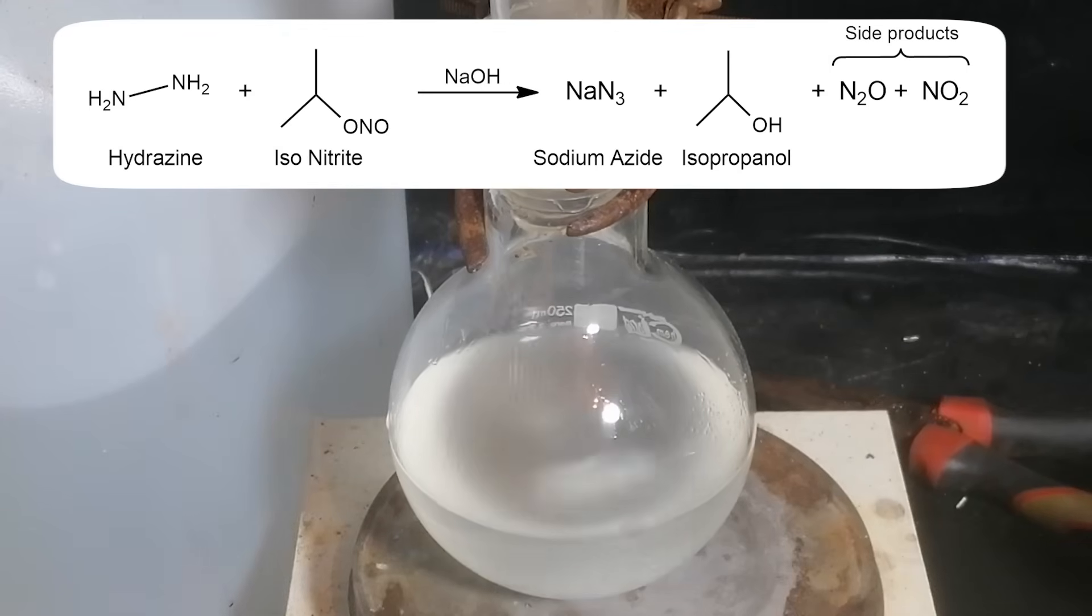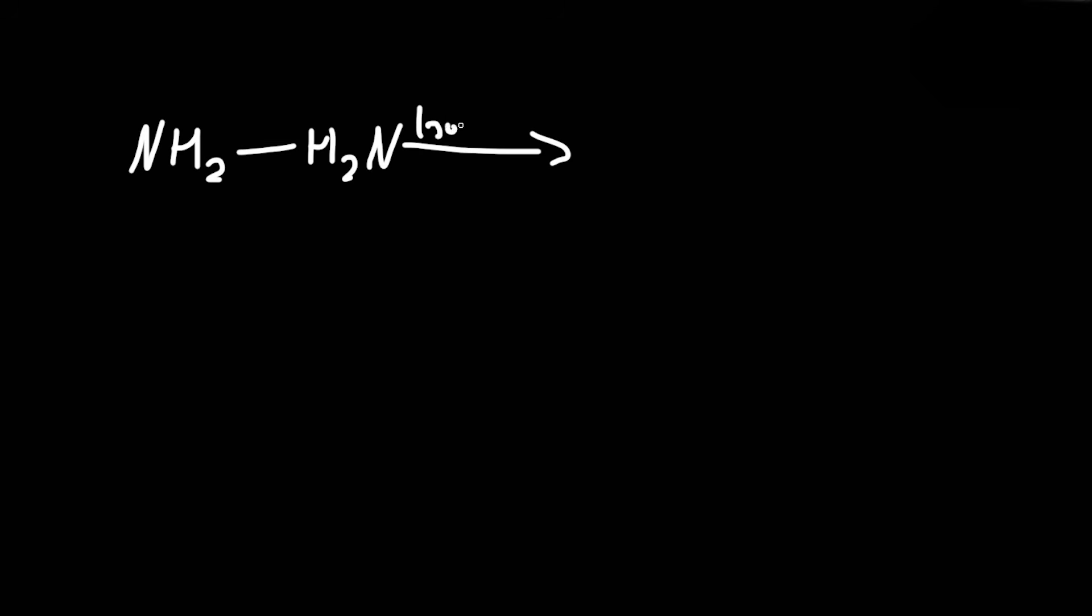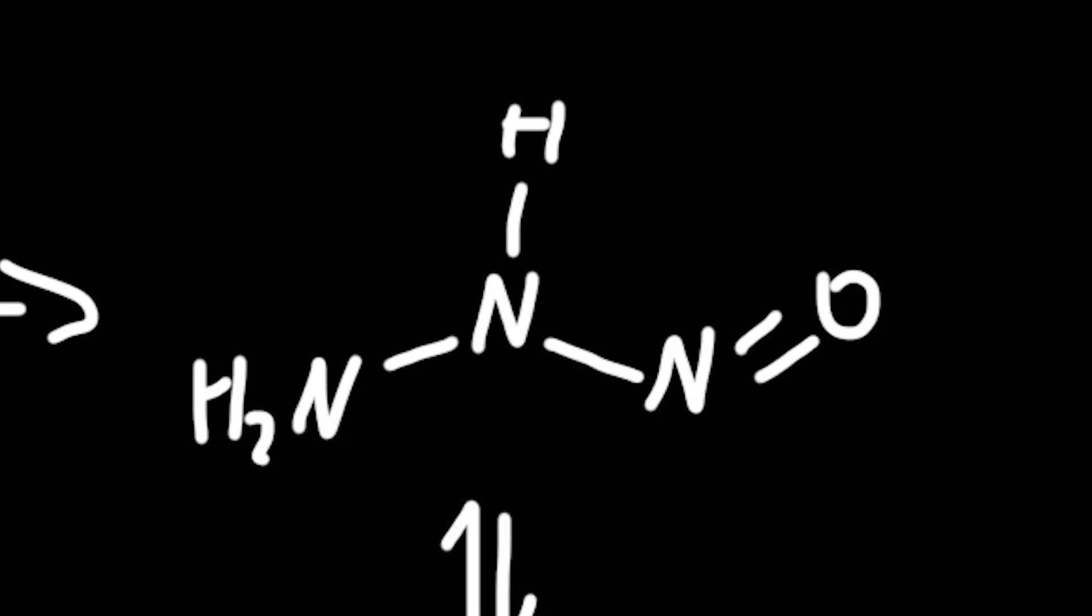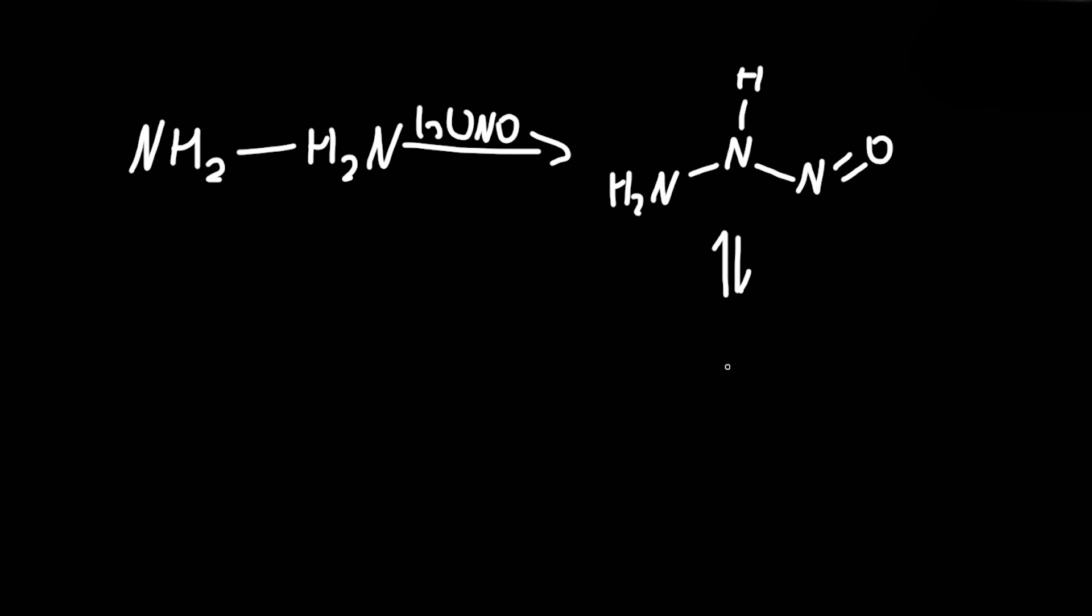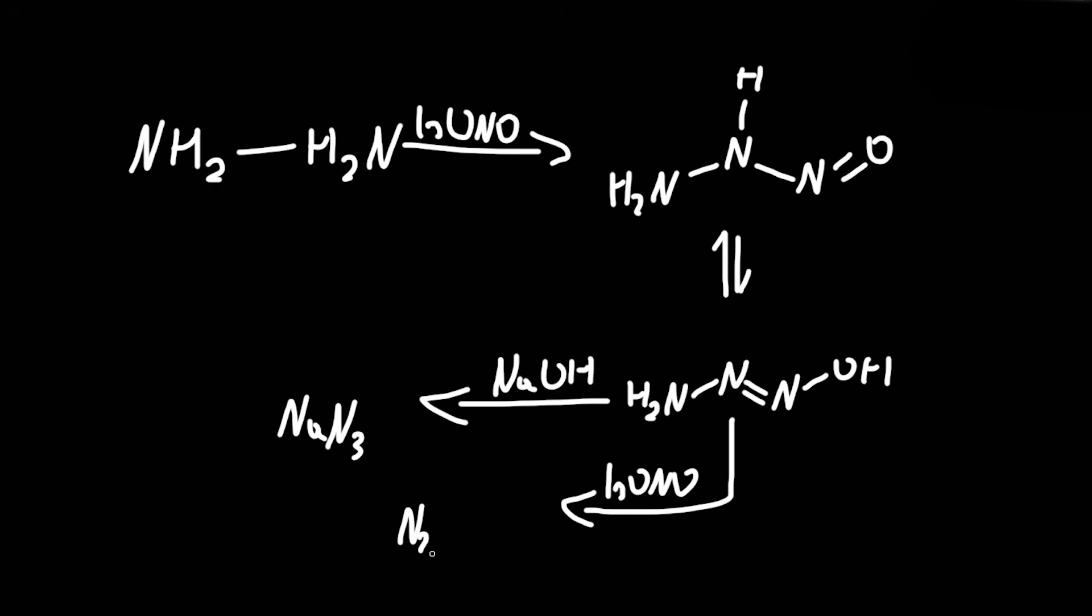The reaction mechanism is actually pretty interesting. Isopropyl nitrite first reacts with hydrazine to form this strange-looking intermediate, and you can see right off the bat that in this intermediate there are three nitrogens in a row, which is where the azide forms. This is then in an equilibrium with this, and it reacts with the sodium hydroxide to form the azide, or it can react with excess nitrite to form laughing gas and nitrogen, which is why the isopropyl nitrite is added dropwise.